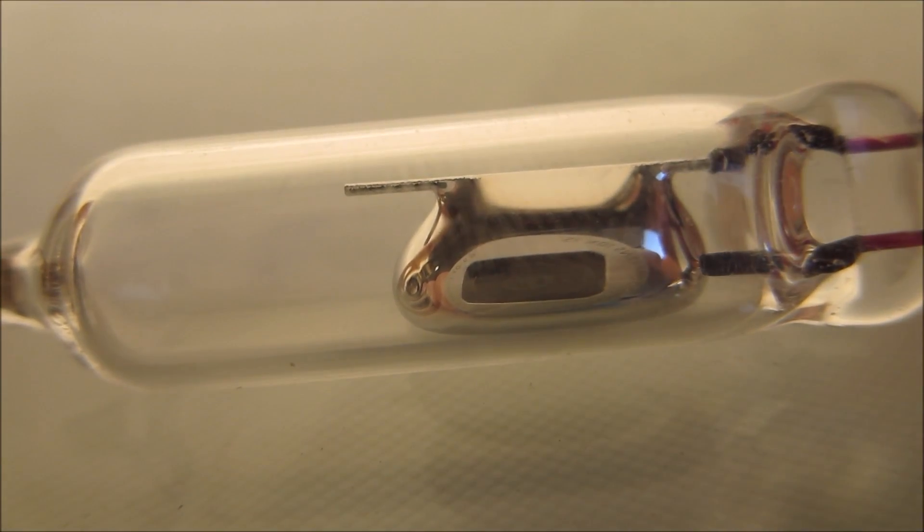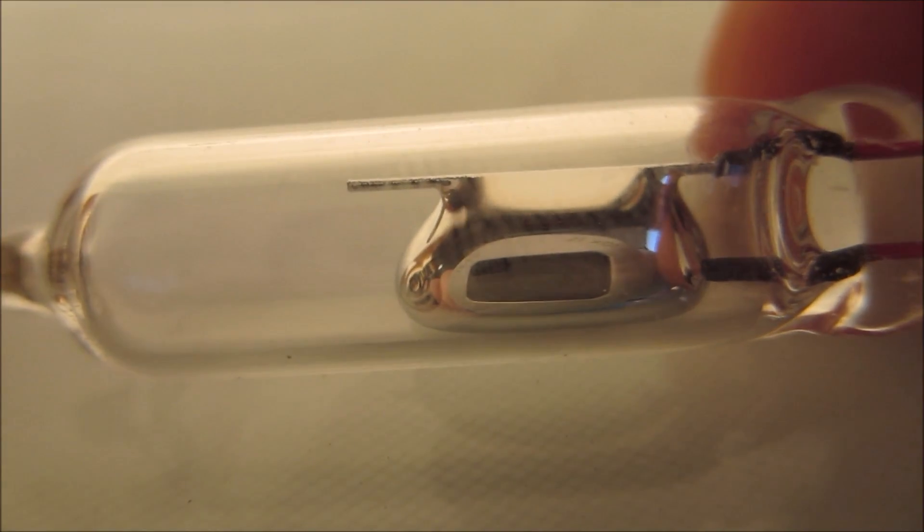You can now see the mercury switch after I've unclipped it from the thermostat housing, and I used a little acetone to clean off the red adhesive. So it's really nice and clear, and you can see the mercury perfectly.